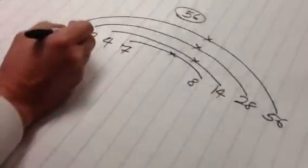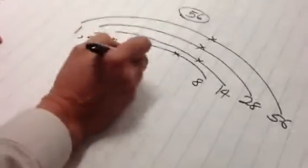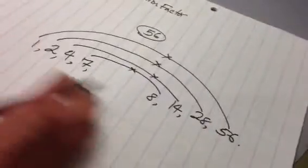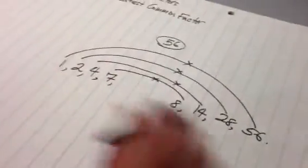So the factors of 56 are 1, 2, 4, 7, 8, 14, 28, and 56 in ascending order, from least to greatest. The factor rainbow sets it up beautifully for you.